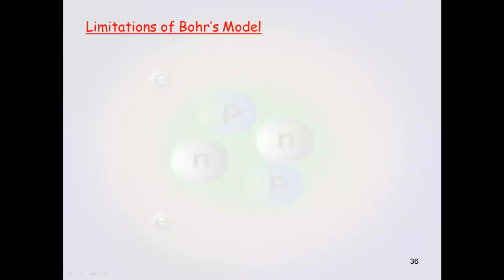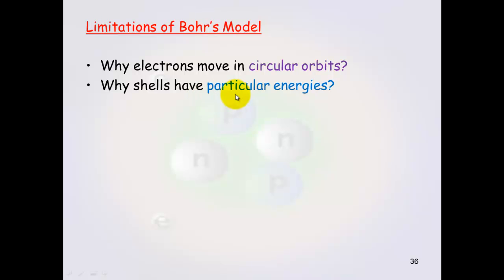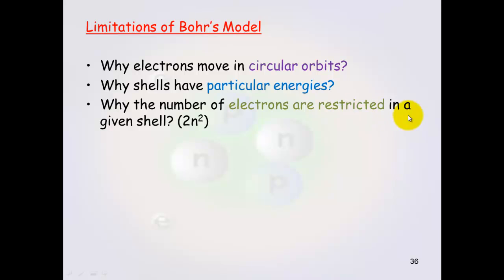There was still some limitation with Bohr's model. Why do electrons move in circular orbits? Why shells have particular energies? Why the number of electrons are restricted in a given shell, which is 2n²?